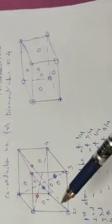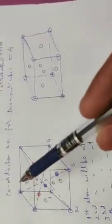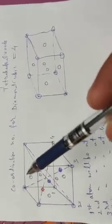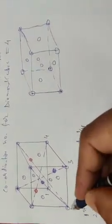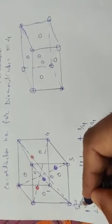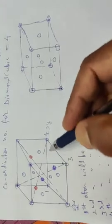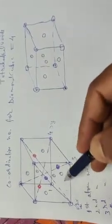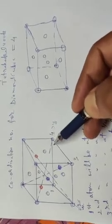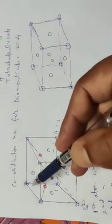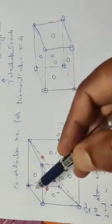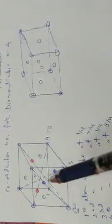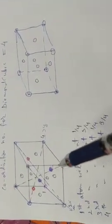Now we will discuss another perspective of this diamond cubic structure. If you see this structure from the upward direction, the arrangement will appear different. Consider this plane — this is X, this is Y, so this is the XY plane. In Miller notation, this same XY plane is at zero position, and the same plane can also be at one position.